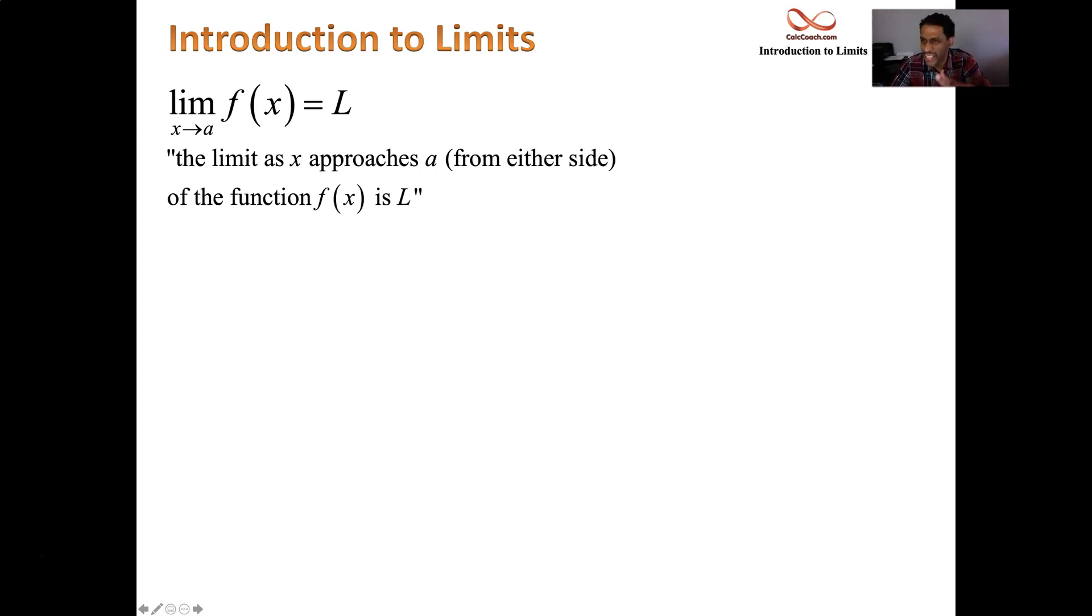The way you read that set of symbols is the limit as x approaches a. Now it's going to turn out that it means from either side. The limit as x approaches a from either side of the function f of x is L. That's how you read that set of symbols there. And what it means is that as x is approaching a, the function values, the y values are approaching L. So L is a y value, A is an x value.